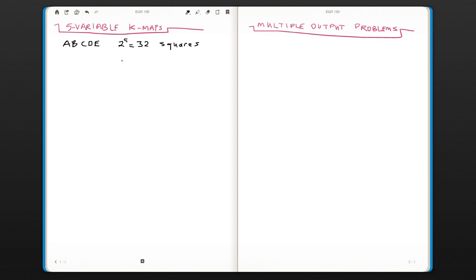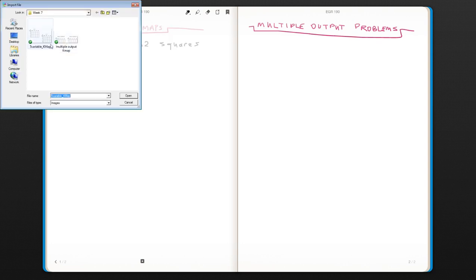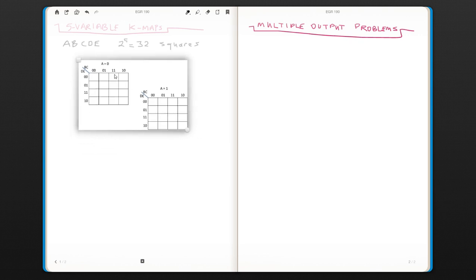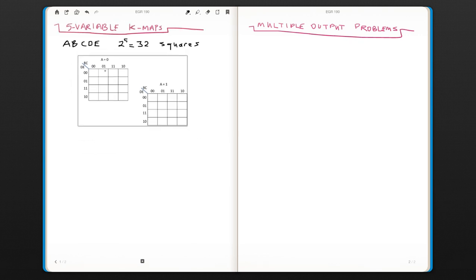So the approach is to make two four by four matrices. So it's going to be something like this. So you will have B, C, D, E as your regular K-map and you will have two maps that will say either A is 0 or A is 1.